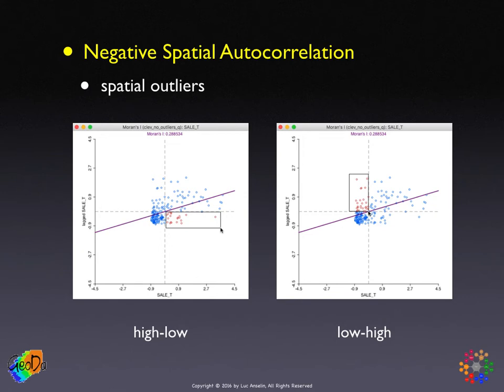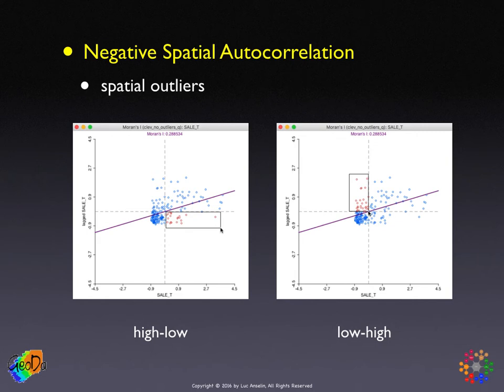The upshot of the Moran scatterplot is simple: Moran's I is the slope of a linear fit visualized in a scatterplot with spatial lags on the vertical axis and the original variable on the horizontal axis. Because it's centered on zero, we can classify spatial autocorrelation by quadrant: high-high and low-low for positive, high-low and low-high for negative spatial autocorrelation.